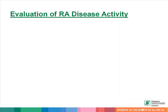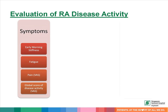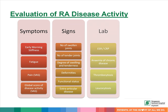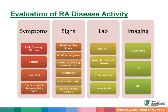To assess disease activity, we ask patients regarding their pain, swelling, early morning stiffness of the joints, and fatigue. We examine patients to look for the number of tender and swollen joints, deformities, functional status, and extra-articular involvement. We look at blood test results focusing on full blood count and inflammatory markers, and also review x-rays of their joints. These days, there is increasing use of musculoskeletal ultrasound and MRI in day-to-day practice.